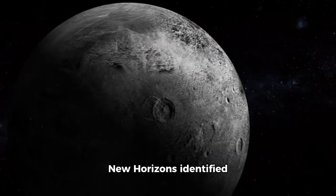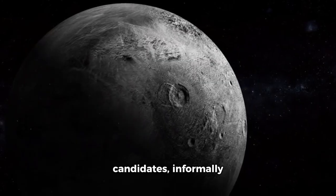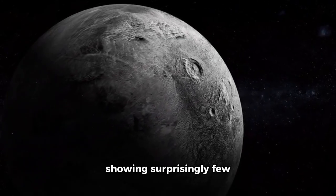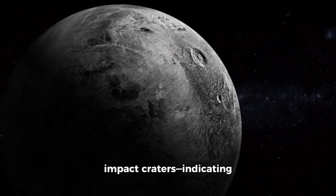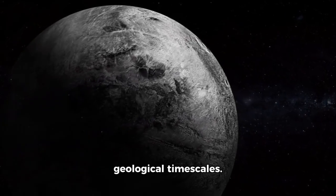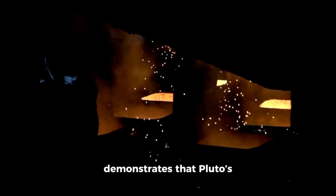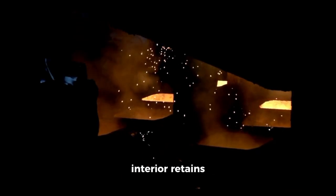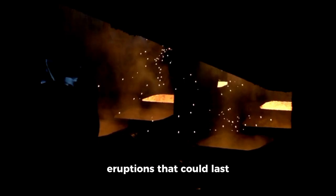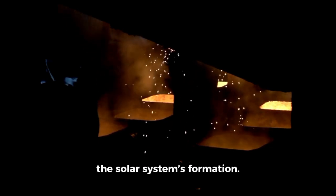New Horizons identified two especially large candidates, informally named Wright Mons and Piccard Mons, both showing surprisingly few impact craters, indicating that they formed relatively recently on geological time scales. Their very existence demonstrates that Pluto's interior retains sufficient heat to drive eruptions that could last billions of years after the solar system's formation.